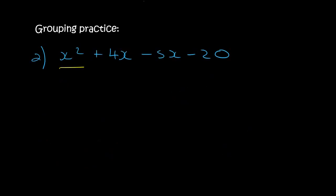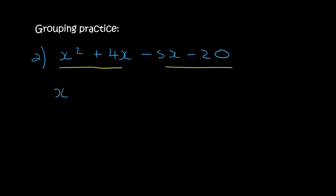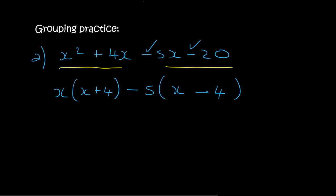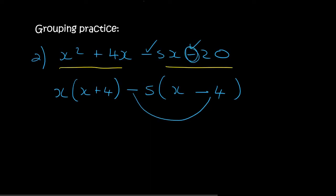Here's another one. We group the first two terms and take out an x, leaving us with x plus 4. In the second two terms we take out minus 5, which leaves us with x plus 4. If I multiply negative 5 by x plus 4, I get a negative, and that matches. But if I put a negative sign incorrectly, when I multiply those two I would get a positive and that wouldn't match what we started with.